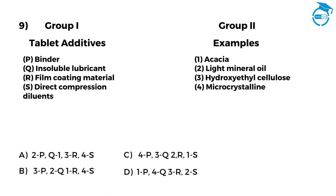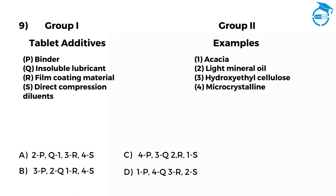Here is the next one. Group 1: Tablet Additives. Group 2: Examples. P, Binder — 1, Acacia. Q, Insoluble Lubricant — 2, Light Mineral Oil. R, Film Coating Material — 3, Hydroxypropyl Cellulose. S, Direct Compression Diluent — 4, Microcrystalline Cellulose. Options: A: P2, Q1, R3, S4. B: P3, Q2, R1, S4. C: P4, Q3, R2, S1. D: P1, Q4, R3, S2. The right option is D, that is P1, Q4, R3, S2.